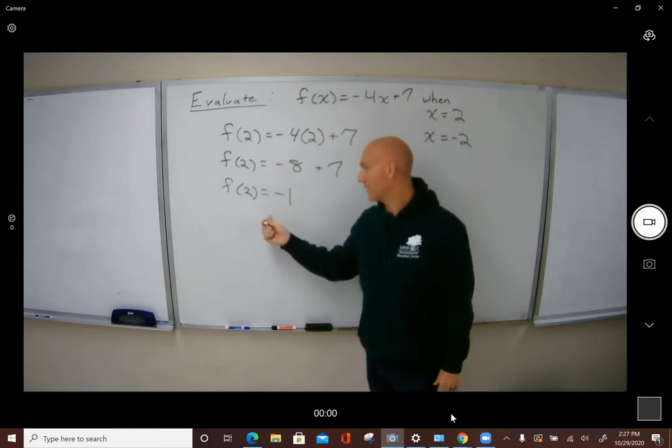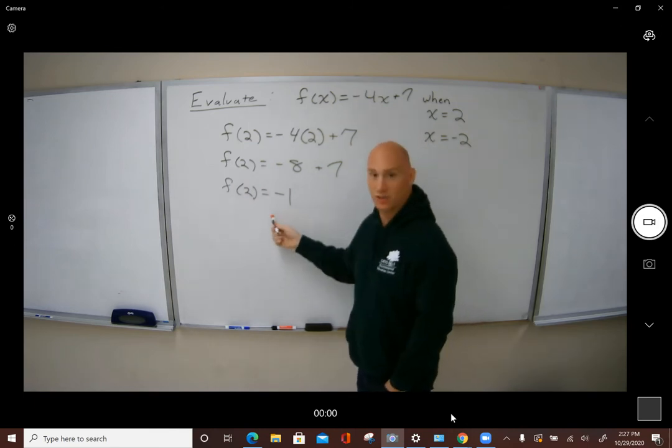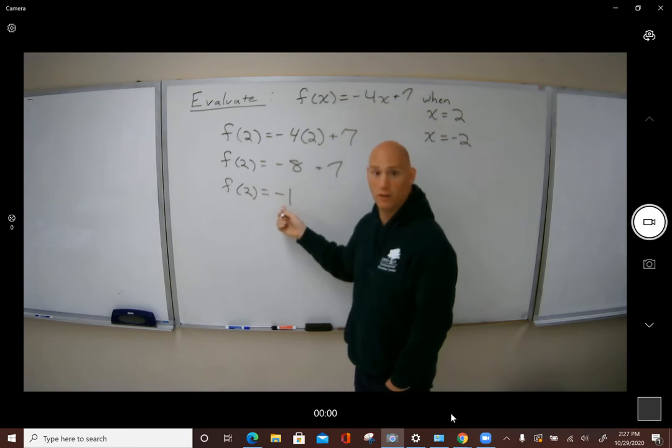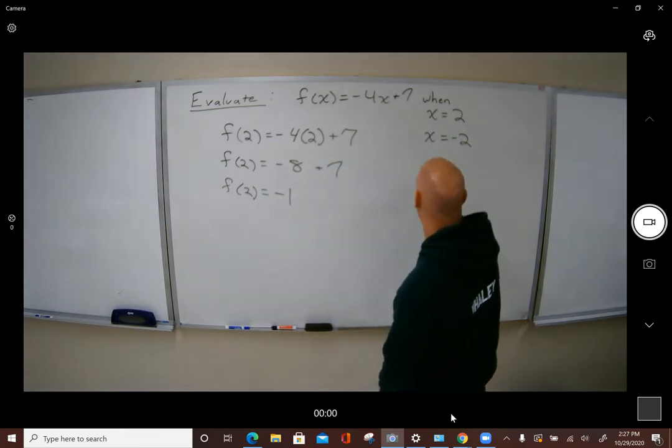Later on in mathematics, this will help you, and this will be—it's a lot more direct. This translates directly: the functional value of 2 is negative 1. You see how that reads correctly from left to right.